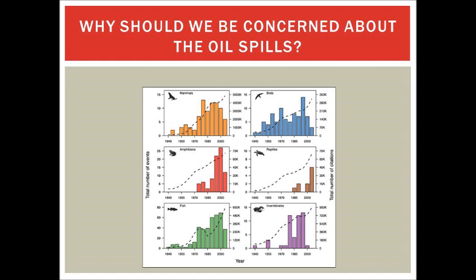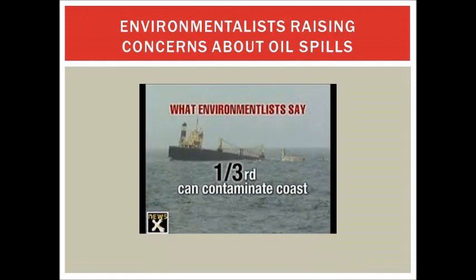Why should we be concerned about these oil spills? Oil spills can cause serious harm to the physical environment and lead to damage to other species further up in the food chain. As you can see, over time oil spills have increasingly damaged mammal life. In recent years, much is being talked about oil spills and environmentalists are raising concerns about these issues.